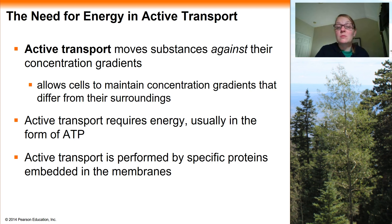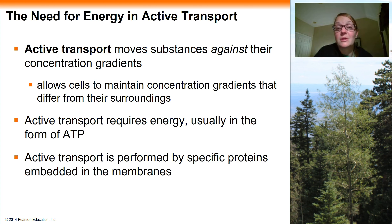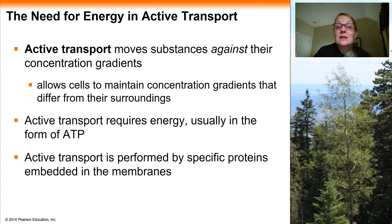Active transport moves substances against their concentration gradients. This allows the cell to maintain differences in concentration across the membrane, so some solutes might be more concentrated on the inside of the cell than the outside, or vice versa. Active transport also requires energy. Usually the way that cells pay for things that take place inside the cell is through the use of an ATP molecule, and active transport is no different. The cell is going to have to use some of its ATP to get those solutes more concentrated on one side of the membrane.